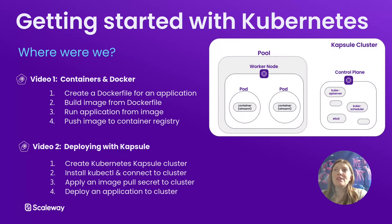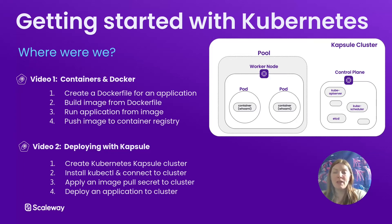So this is what our cluster looked like at the end of the last video. It's a pool consisting of just one node with two pods running our containerized Whoami application. There's also the control plane, but since that's managed by Scaleway we don't need to worry too much about it. For the purposes of this video we will assume that you've already followed the first two videos and you have deployed an application on your Kapsul cluster that looks a little bit like this.